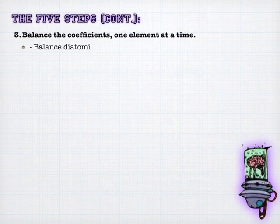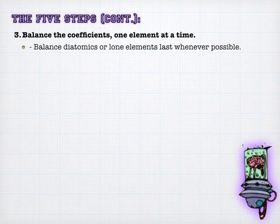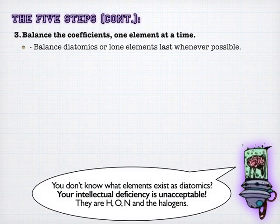And then step three, balance the coefficients one element at a time. Diatomics, save for last. Lone elements, save for last. And the reason you want to do this is because whatever coefficient you put in front of a lone element or a diatomic element is only going to affect that element. If you throw a coefficient in front of some big compound, you're going to mess up a bunch of elements. And you're going to have to go back and fix them all up. The diatomic elements, you should memorize. And that's H-O-N, hydrogen, oxygen, nitrogen, and the halogens.